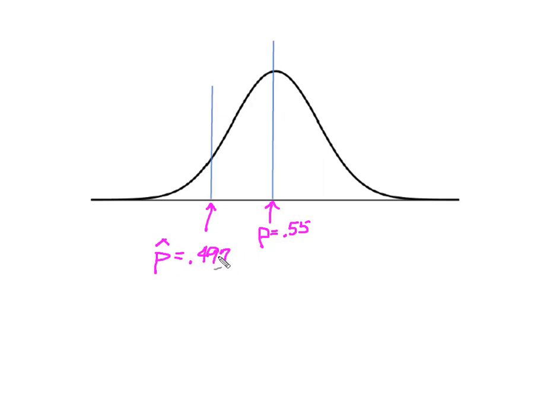And I know that I'm solving for the probability that fewer. So I'm really solving for the probability that our sample proportion, P hat, will be less than 0.497. To do that in Minitab, we're going to use normal distribution and a cumulative distribution function.